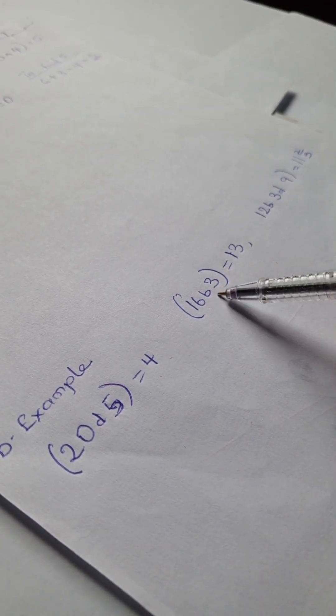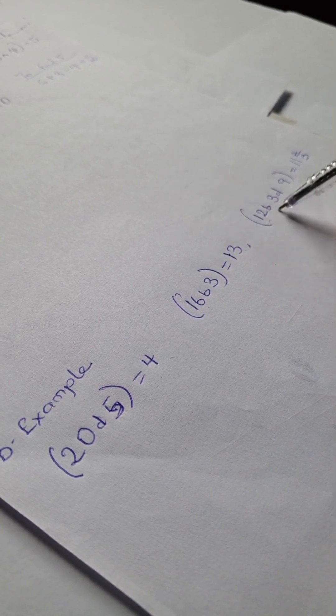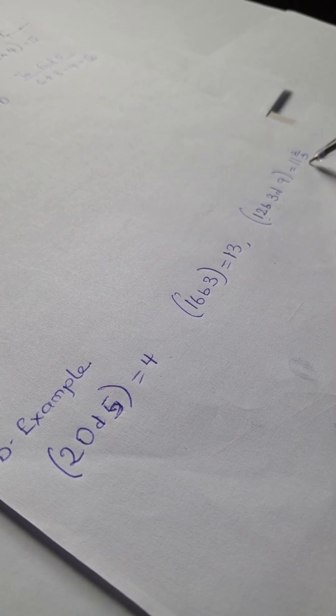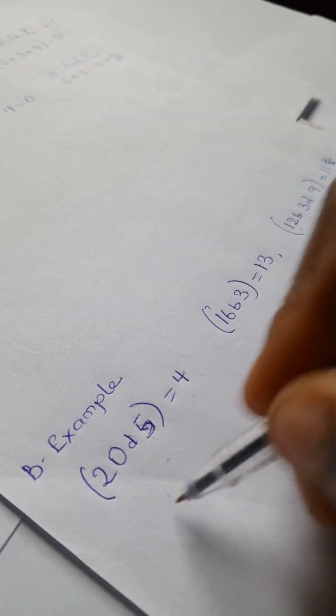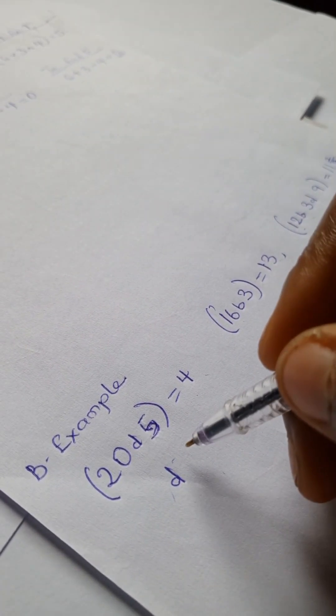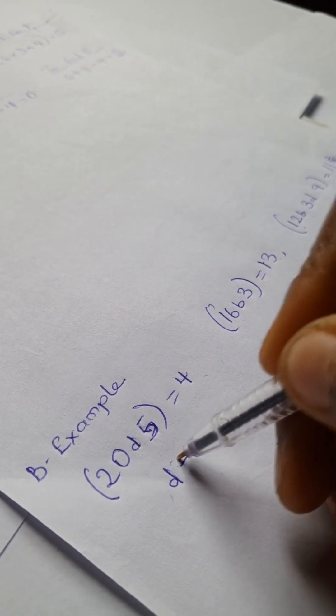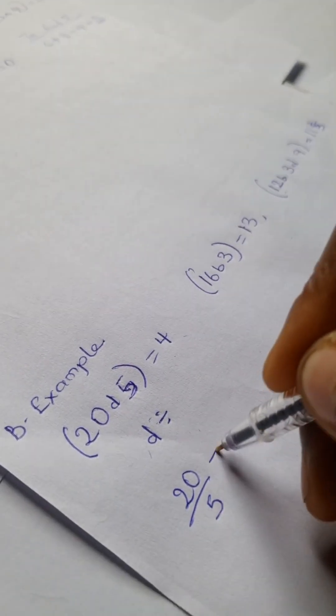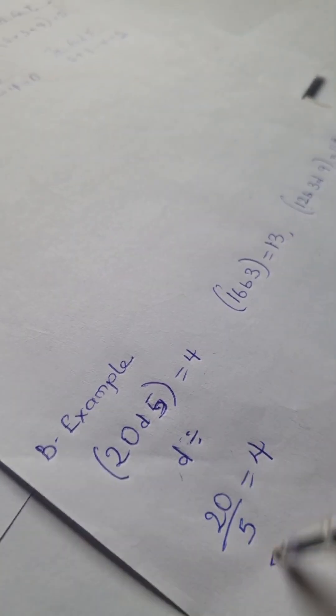And we have 16 B 3 equals 13, and here we have 12 B 3 D 9 equals 11 and 2/3. For every time you see your D, D symbolizes division. So 20 divided by 5 equals 4.